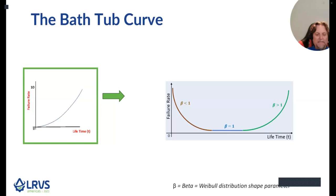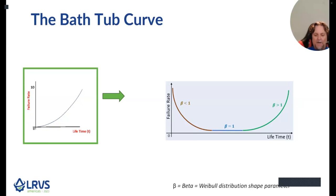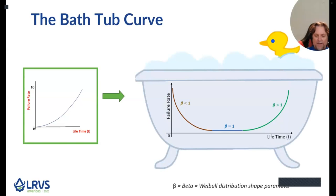We have previously defined the required reliability concepts, so now let's move into building the bathtub curve. The theoretical bathtub curve is essentially a combination of three failure rate curves — the red, the blue, and the green. We have the failure rate or speed of failure over time on the vertical axis and the asset lifetime on the horizontal axis. When the three curves are combined, we have a U or V shape figure in the form of a sanitary bathtub, and that's where the name comes from.